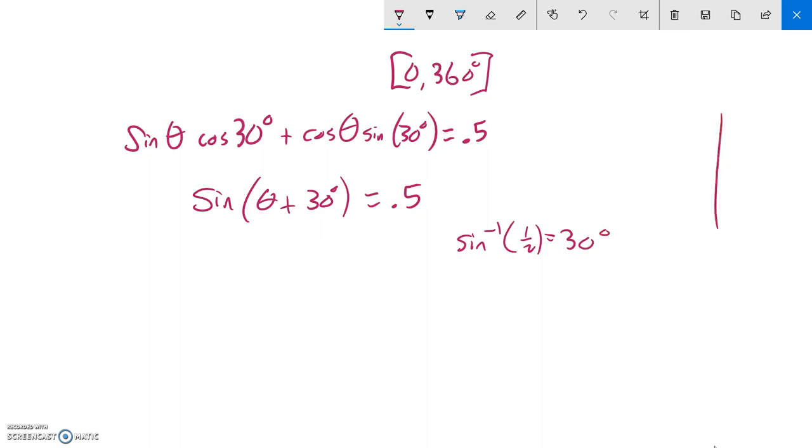But I know that's not the full story, because sine gives me a height, and it gave me this 30 degrees. But there's another angle that would have the same height.